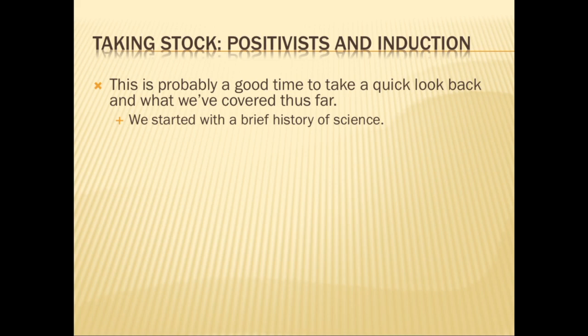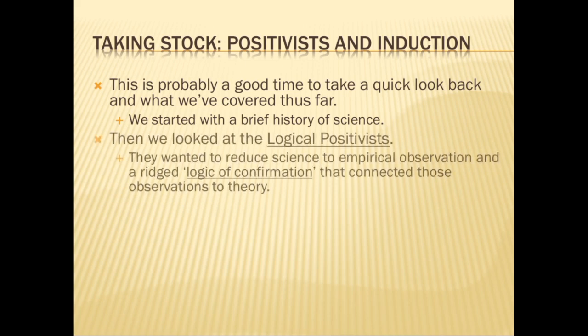We really got rolling when we got to the early 20th century philosophy of science, starting in particular with the logical positivists. The positivists were trying to find a kind of logic of confirmation that they would combine with a strictly defined understanding of what empirical observations were, and that would allow the grounding of any proper, legitimate scientific theory. So: empirical observation plus logic of confirmation equals a grounding of a scientific theory.